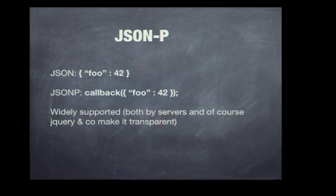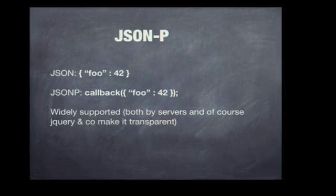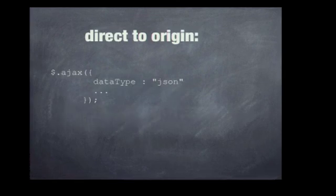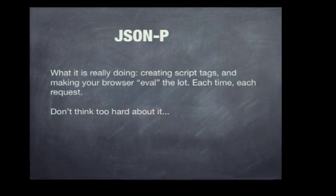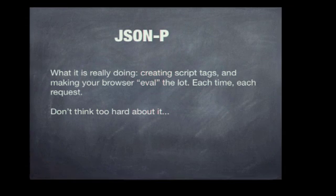Here's a quick revision. Bare JSON at the top. With JSONP, you wrap a callback around it, turning it into a function call. That string is returned to the browser. Libraries on the client like jQuery make it transparent. If you're doing a direct Ajax call in jQuery, it'll look similar, but with JSONP cross-domain, you just say the data type is JSONP and specify the callback name. What it's really doing is creating script tags behind the scenes and making your browser eval it for every request. I don't like to think too hard about that — it's just amazing how it works, but it does.